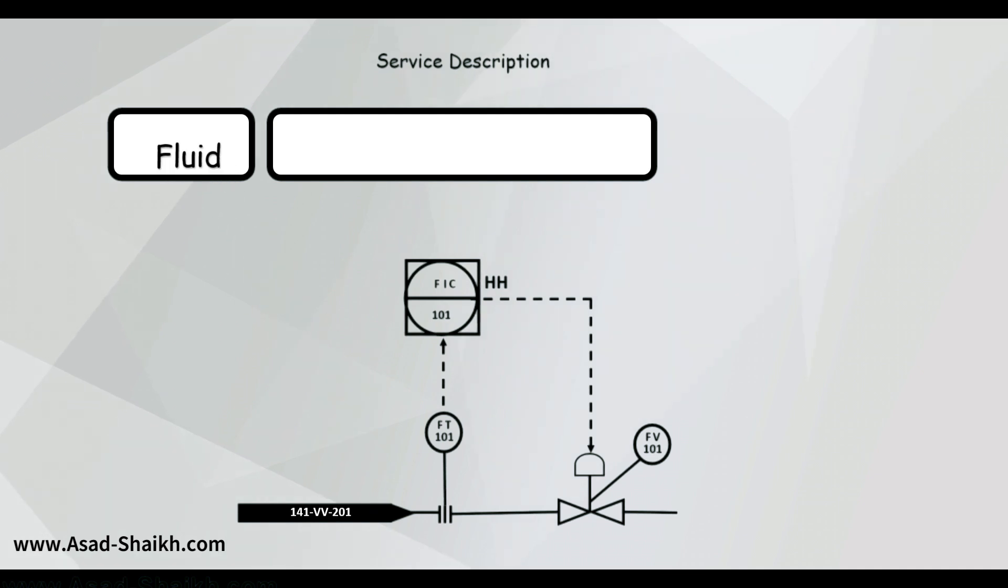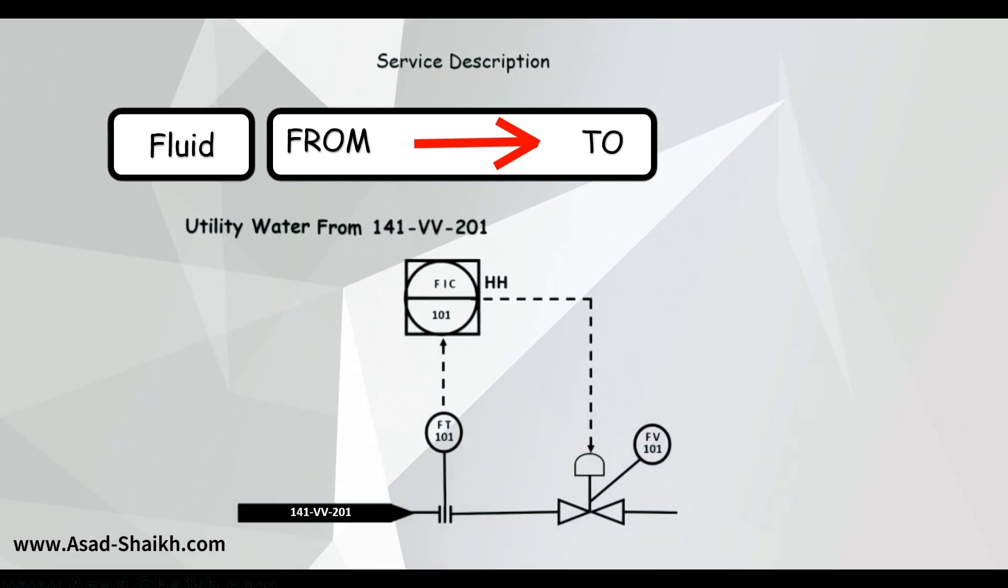Let us talk about the most common ways to enter service description. It is broken down into three important components. The first one being what is the fluid. Let us take an example. So if you see here for our case let us imagine that utility water is flowing through it. So next important thing is from where is it coming. And then you have where is it going to. So the from-to concept comes into picture. So if you see here for example it comes from an equipment VV201 and then it goes to a pump suction which is 141 PC 301. So an operator when he is looking at the DCS would know okay fine utility water is going from this section to this section.